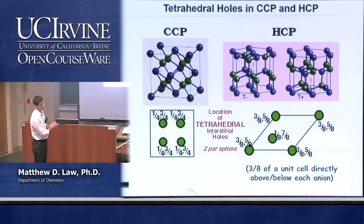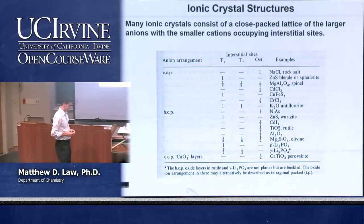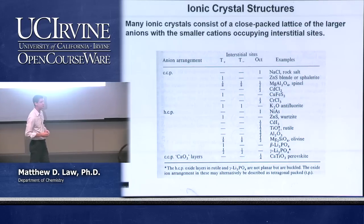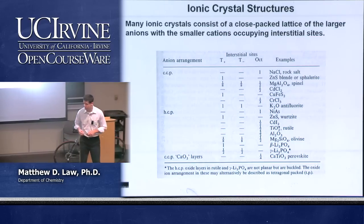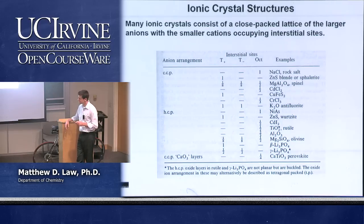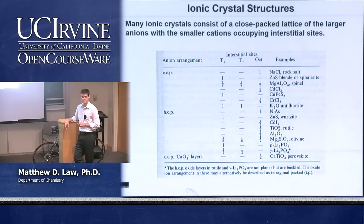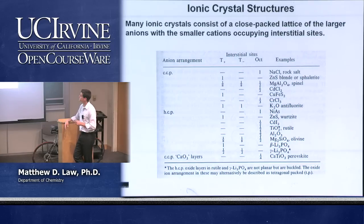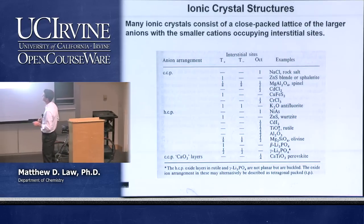Now for the main business: generating crystal structures using close-packed interstitial filling. A table shows that taking a CCP anion arrangement and filling all the octahedral sites gives the sodium chloride (rock salt) structure. Filling none of the octahedral sites but half the tetrahedral sites gives the zinc blende structure. Many important crystal structures can be generated this way.